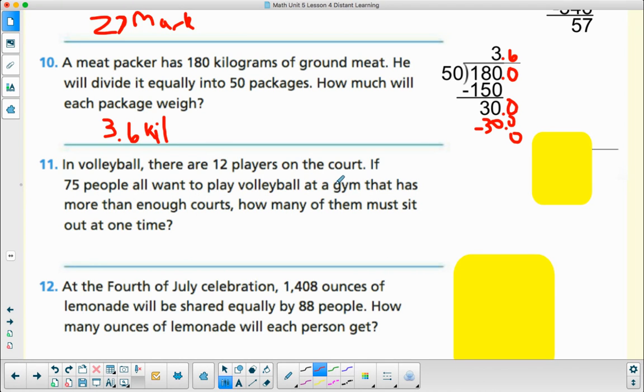Eleven: In volleyball, there are 12 players on a court. If 75 people all wanted to play volleyball at a gym that has more than enough courts, how many of them must sit out at one time? So they have more than enough courts for all the people, but they're getting broken up into 12 players, 6 on each side, right? So as I take the 75 and divide it into 12 players, there's going to be 6 games going on, but I have a remainder of 3. Well 3 is what's left of the 75. 75 are the people. 72 people are playing. The remainder of 3 are how many people aren't playing or the ones that have to sit out. So that's my answer, 3 players.